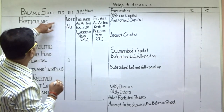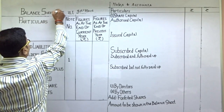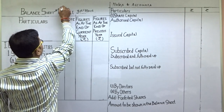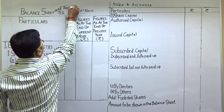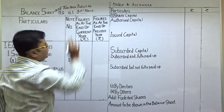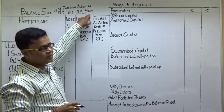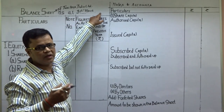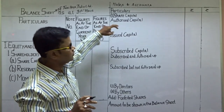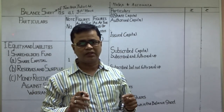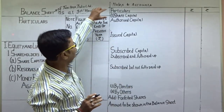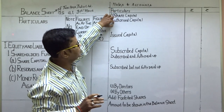Balance sheet में सबसे पहले कंपनी का नाम आएगा — कौन सी कंपनी है — Tector India Limited। Date क्या है — 31st March, अगर दिया हो तो वह दिखेगा। अब कंपनी के पास total एक लाख equity shares हैं जो 10 रुपए प्रति share के हैं। Authorized capital में total number of shares एक लाख हैं।